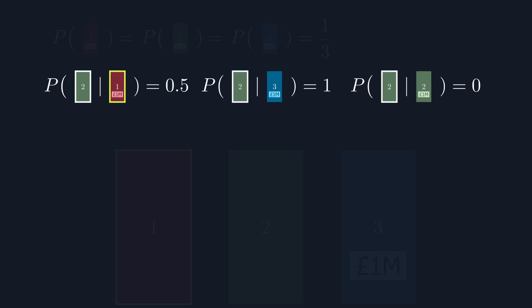If we want to know how likely it is that the money's behind door one, we write it like this: the probability of the money being behind door one, given that door two is open. To work this out, let's start with the formula for ending together dependent probabilities we worked out in the last video. By rearranging this, we can get a formula for a dependent probability.